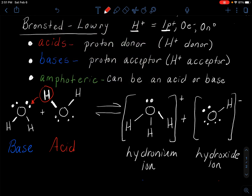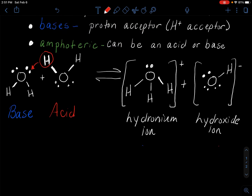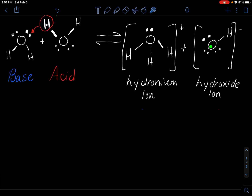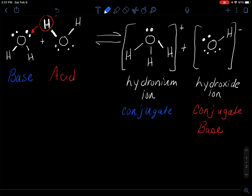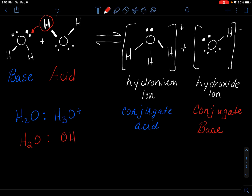Before we go further into the math, I want to label these as a conjugate acid-base pair. With Bronsted-Lowry definitions, the reverse reaction also needs an acid and base that return to the reactants. The hydroxide ion is called the conjugate base of the water molecule that acted as the acid. The hydronium ion is the conjugate acid of the water molecule that acted as the base. These are conjugate acid-base partners.